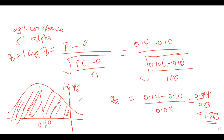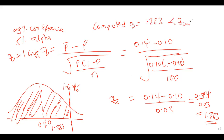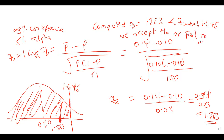The critical z-value is 1.645 and the computed z-value is 1.333. Since 1.333 is less than 1.645, it lies within the acceptance region. Therefore, we accept the null hypothesis — or equivalently, we fail to reject it.